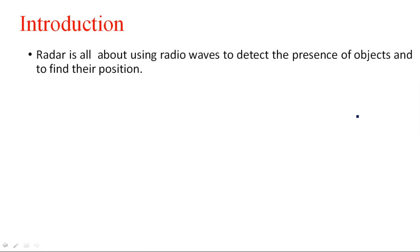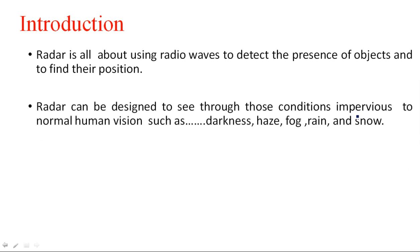I will explain the introduction, the advantages of the radar system, and the basic principle. Radar is all about using radio waves to detect the presence of objects and find their position — that is, at what distance the object is located. Radar can be designed to see through conditions imperious to normal human vision, such as darkness, haze, fog, rain, and snow.